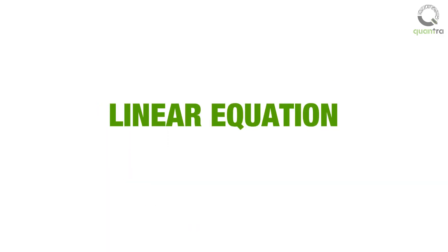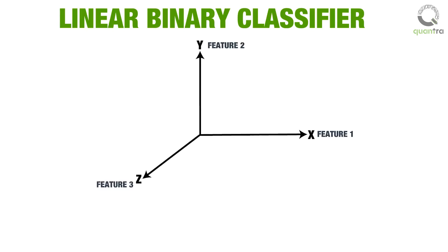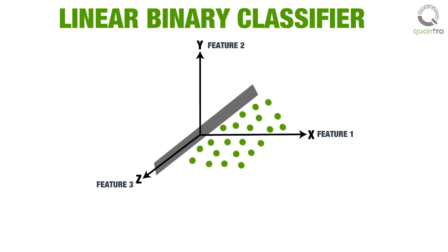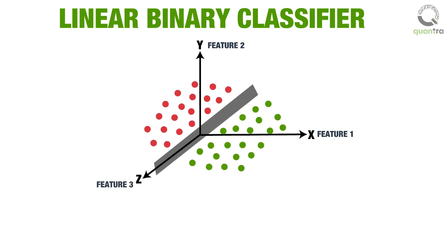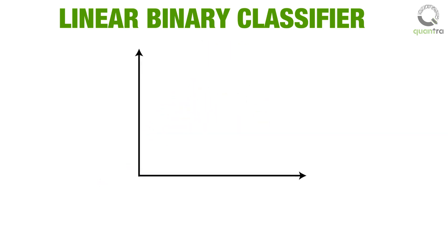Let us start by looking at a linear equation for performing the classification. Think of training examples as points in an n-dimensional space, where each dimension represents a feature. A linear binary classifier defines a plane in the space which separates the positive outcomes from the negative ones. For simplicity, consider this two-dimensional space, where the x- and y-axis correspond to features used to develop the classifier.